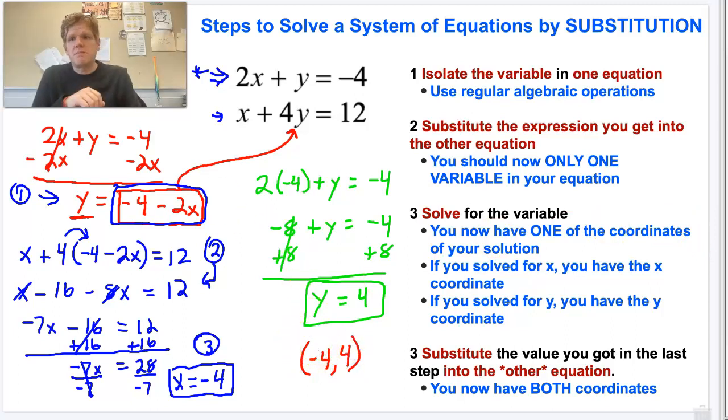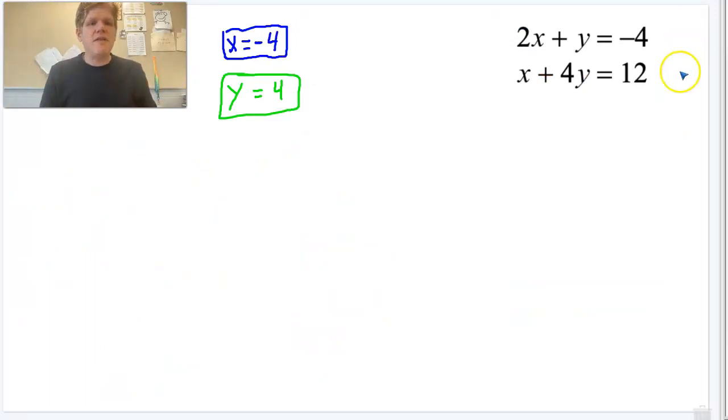Now we can check it. So we got x is equal to negative 4 and y is equal to 4, which again was our point, negative 4, positive 4. And that is the point where these two lines intersect. So wherever they intersect, that's the point, this is negative 4, 4.